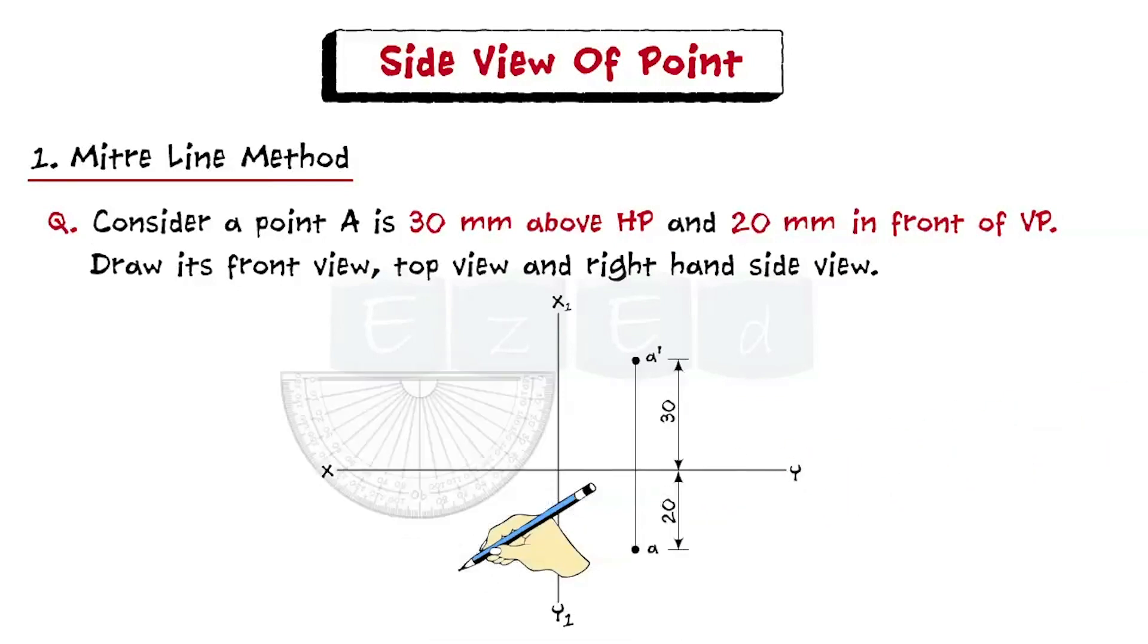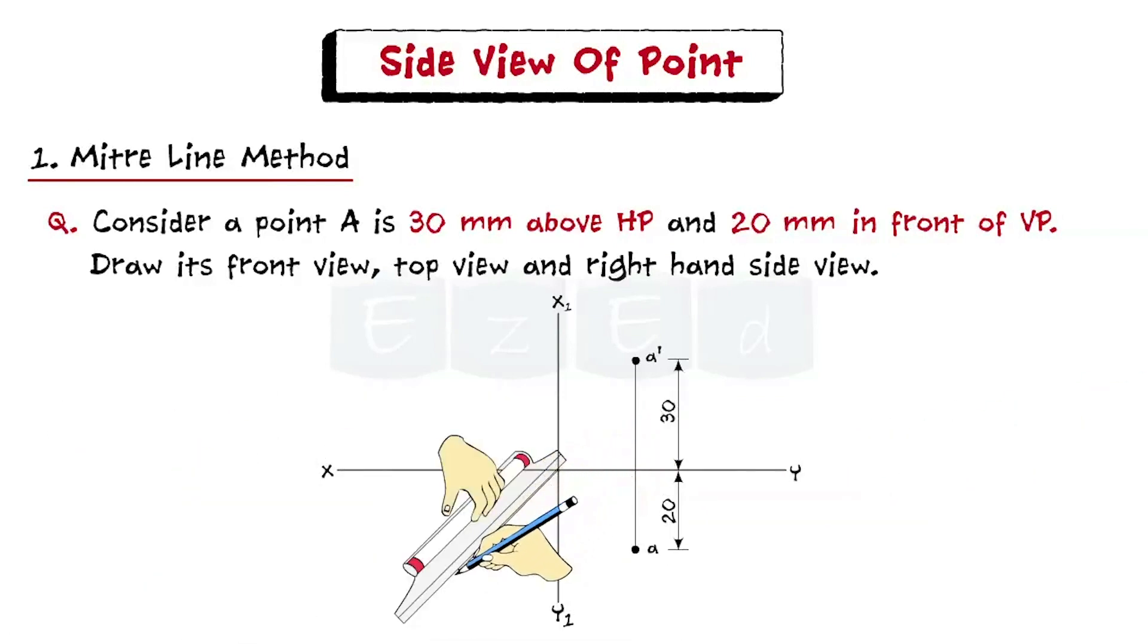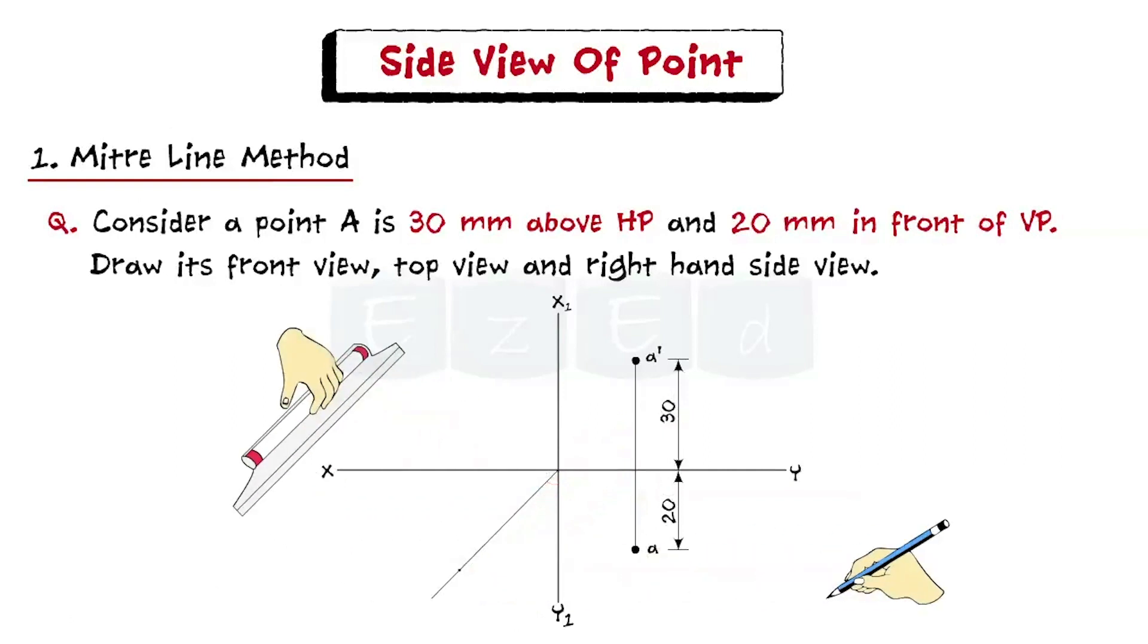Step 5. For meter line method, we draw a line at an angle of 45 degree from the point of intersection of XY and X1, Y1.